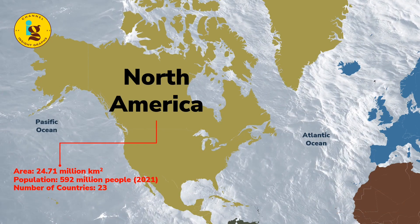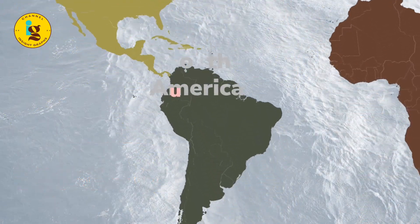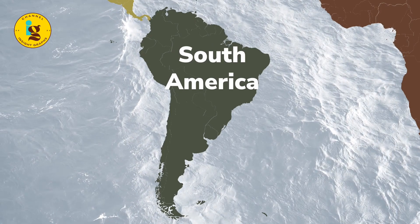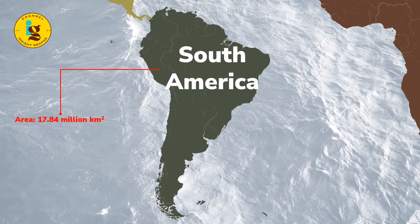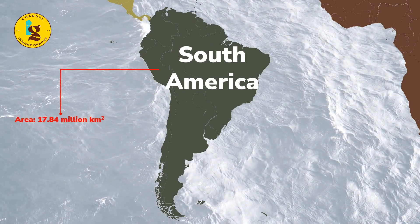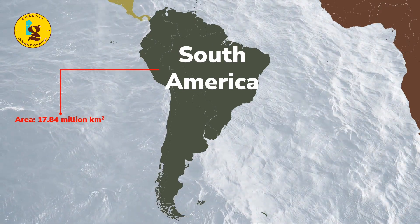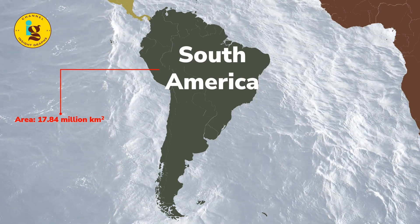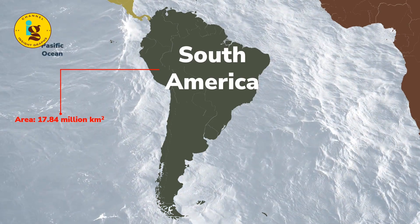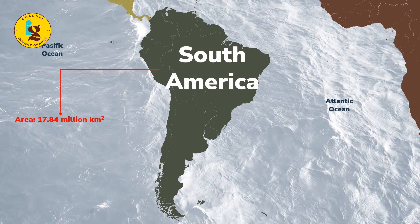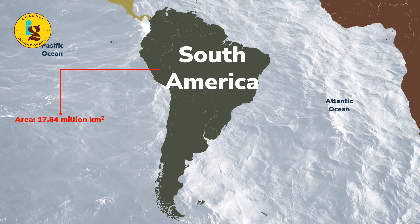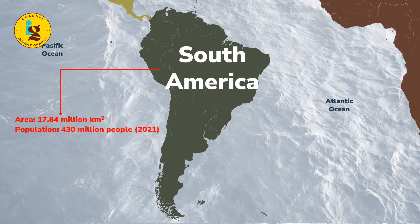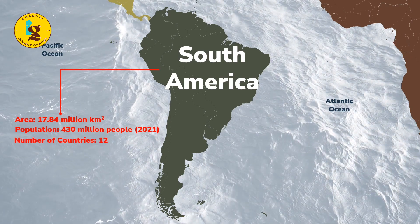South America is the fourth largest continent on earth, covering approximately 17.84 million square kilometers. It is located primarily in the southern hemisphere and is bordered by the Pacific Ocean to the west, the Atlantic Ocean to the east, and the Southern Ocean to the south. It has a population of over 430 million people and is home to 12 countries.